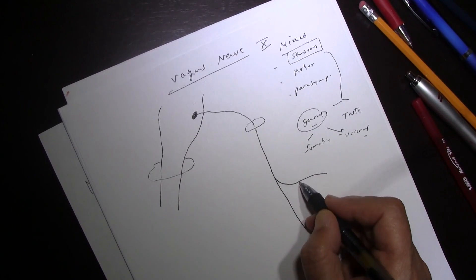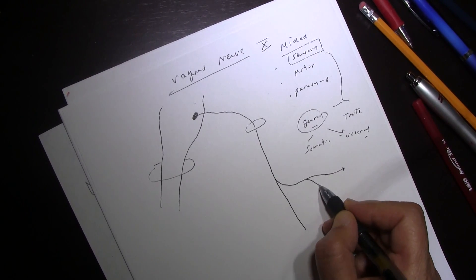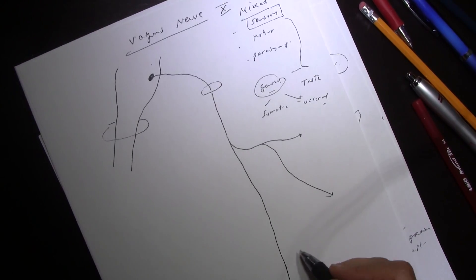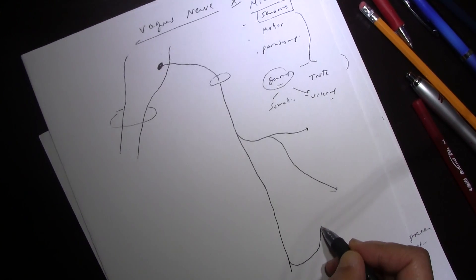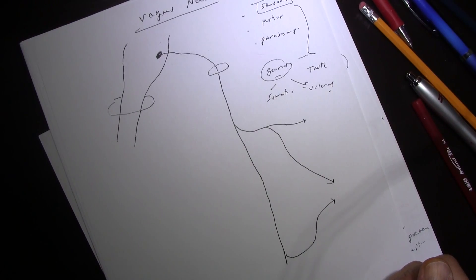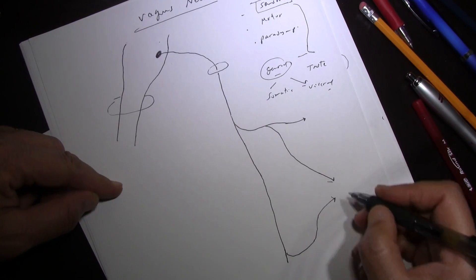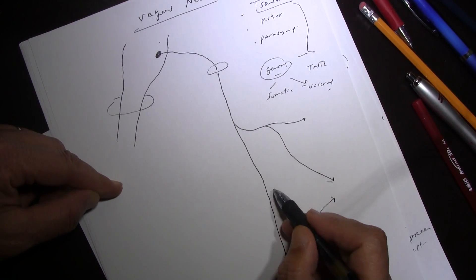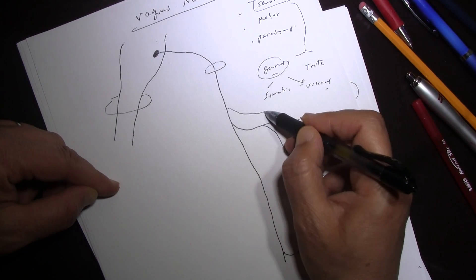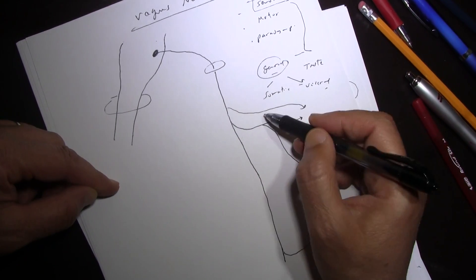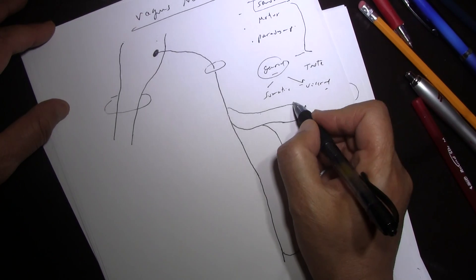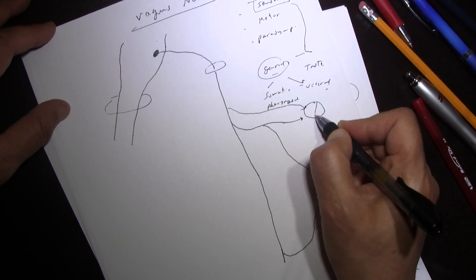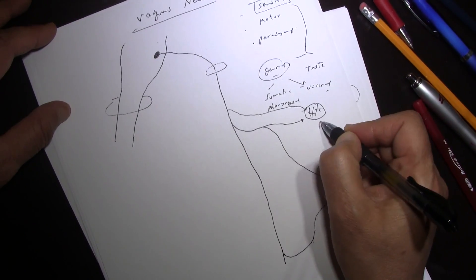The motor fiber of the vagus goes through the superior laryngeal branch, which divides into the internal laryngeal and the external laryngeal nerve. Then the vagus gives another nerve called the recurrent laryngeal nerve. Another branch is the pharyngeal nerve. So we have three motor branches.